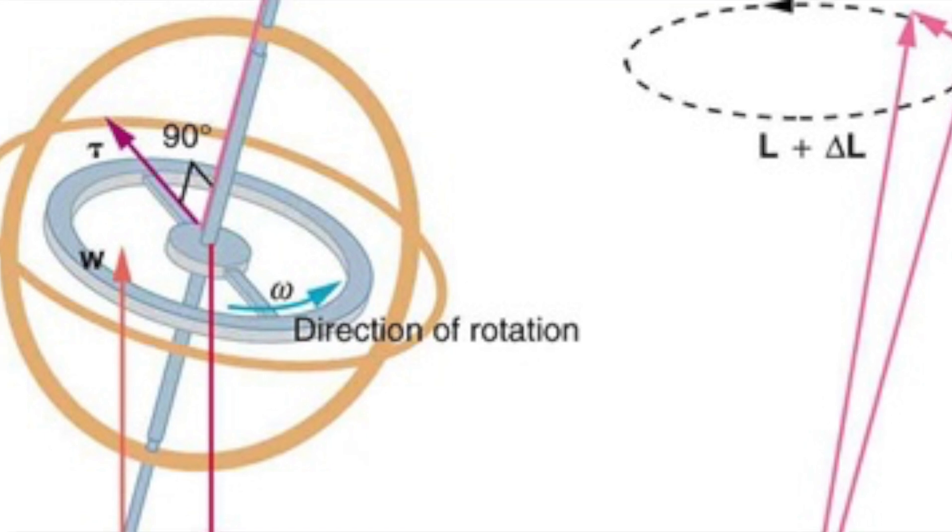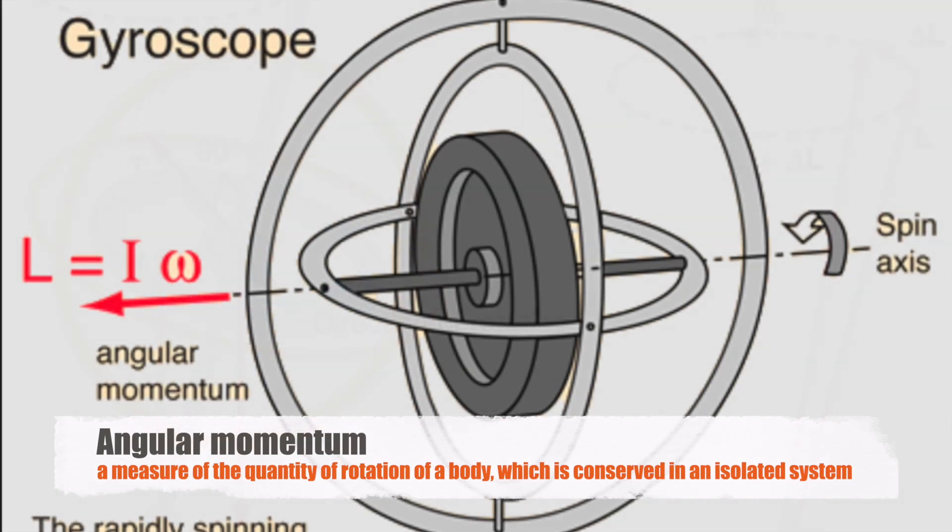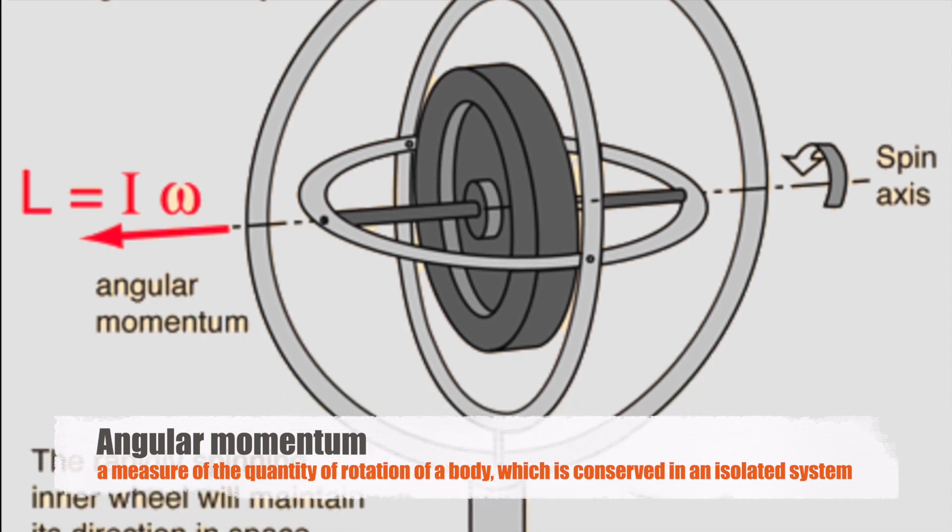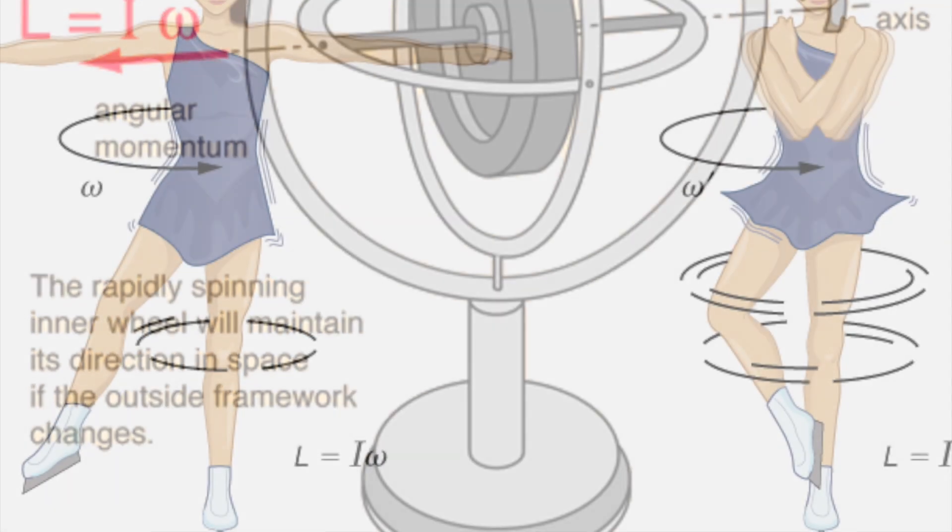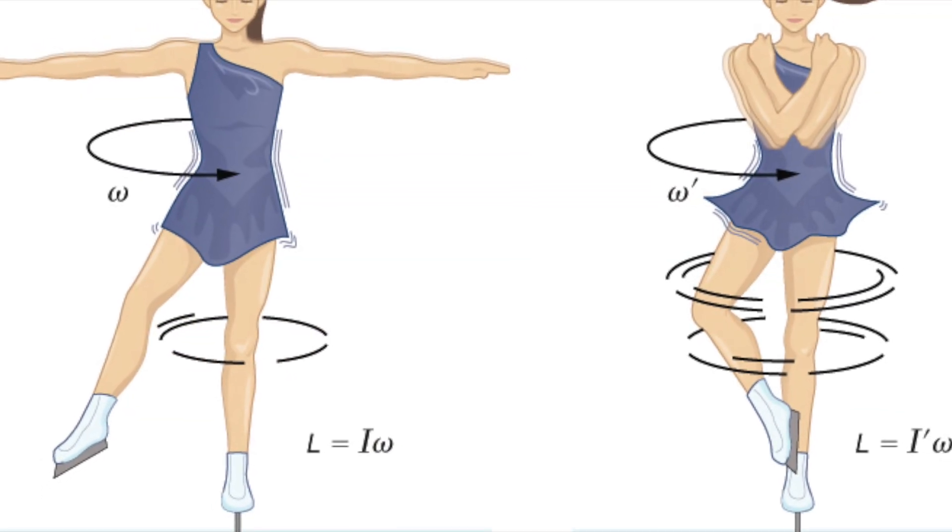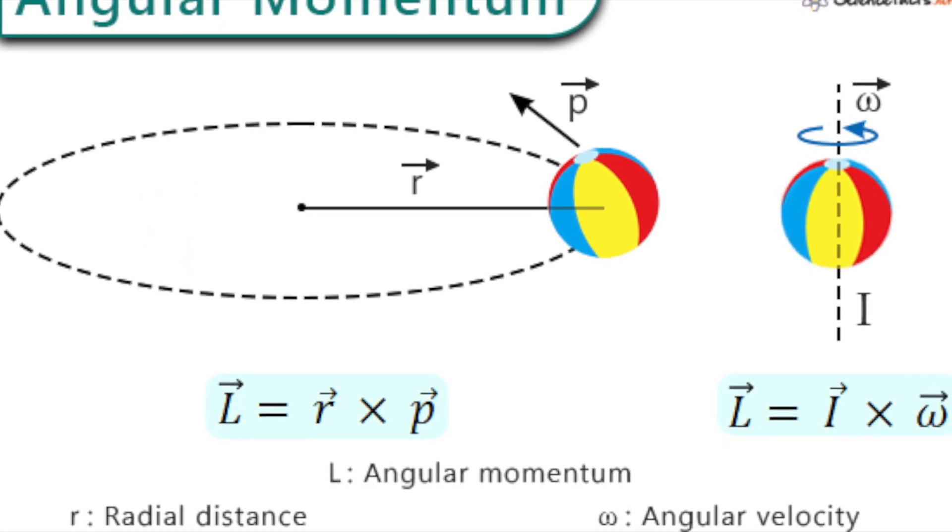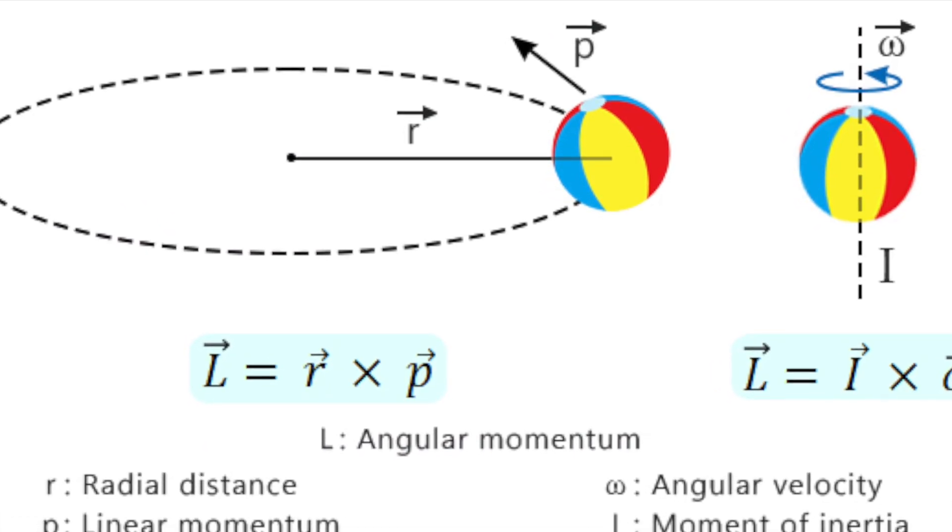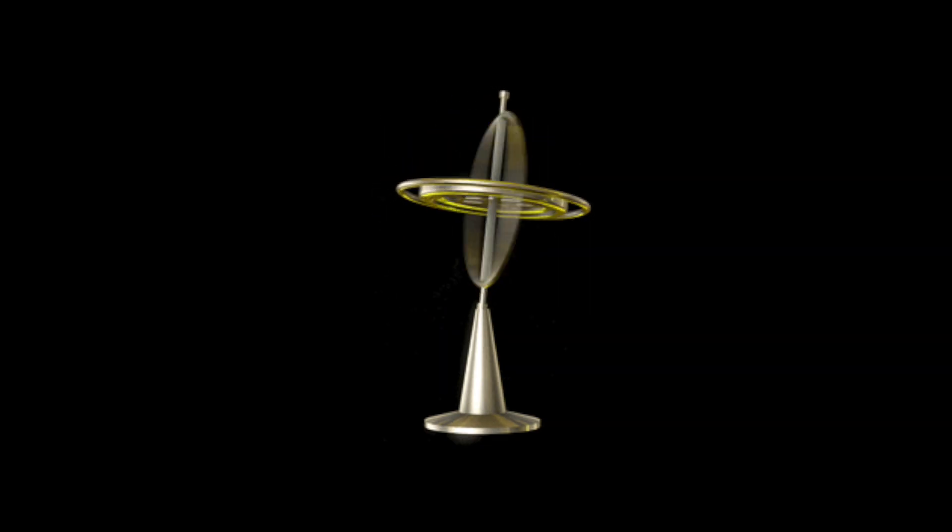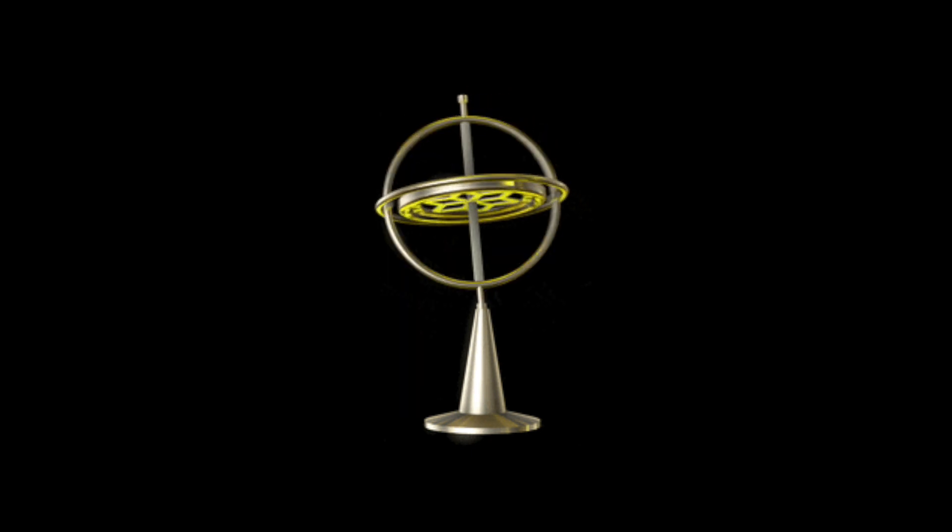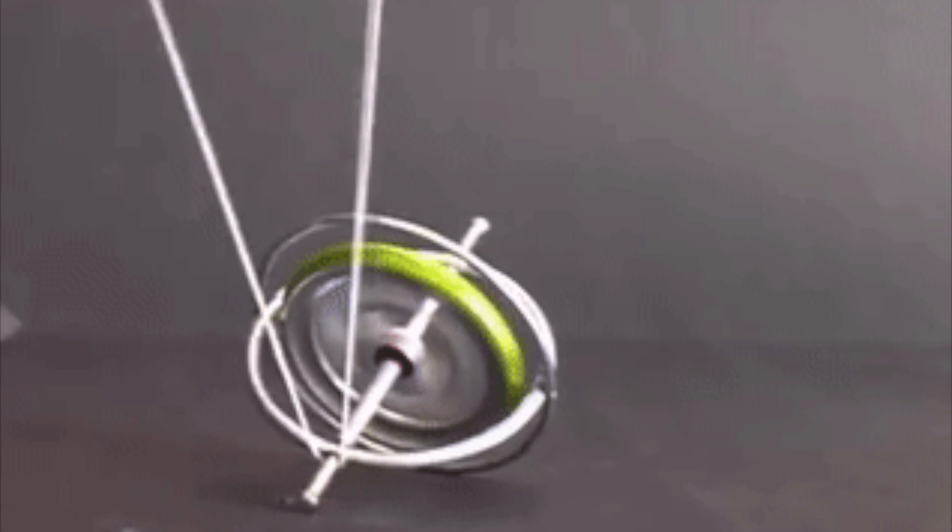To understand how a gyroscope works, we need to delve into the concept of angular momentum. Angular momentum is a measure of the quantity of rotation of a body, which is conserved in an isolated system. It is the product of the moment of inertia and the angular velocity. When a gyroscope spins, it generates angular momentum, and because of the conservation of angular momentum, the gyroscope resists changes to its orientation. This resistance to change is what allows the gyroscope to maintain balance and keep its axis pointing in a constant direction.